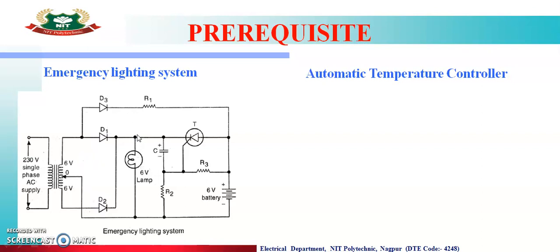D1 और D2 के वजे से हमको यहाँ पर pulsating DC voltage मिलेगा। तो जो DC voltage मिलेगा उसके वजे से जो यहाँ पर 6V का लैंप है वो on होगा। उसी के साथ-साथ AC supply है तो यह current D3, R1 से होके battery में flow होगा, therefore the battery is going to charge.